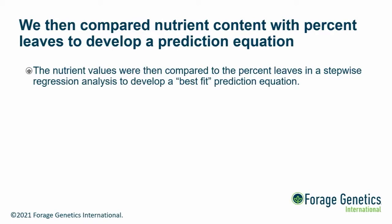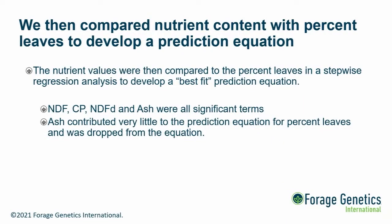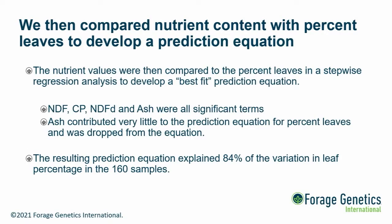We then compared those leaf percentages measured by stripping with the nutrient profiles using stepwise regression analysis. What that means is we built prediction models starting with the best one-nutrient model, then two, three, and four nutrients. We found that NDF, crude protein, NDFD, and ash were all significant terms contributing to our ability to predict leaves from the nutrient profiles of a ground-up alfalfa sample. Subsequently, ash contributed very little and we dropped it — mainly because of potential soil contamination, and because NIR doesn't pick it up directly anyway.